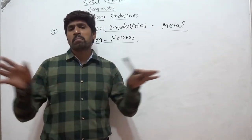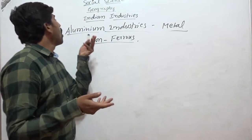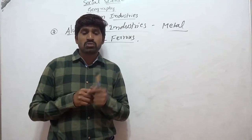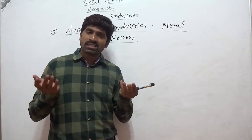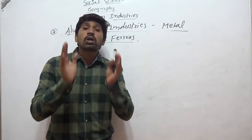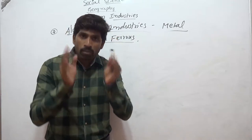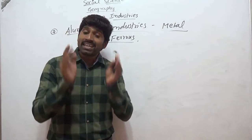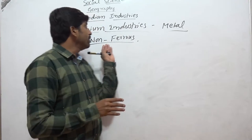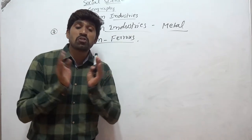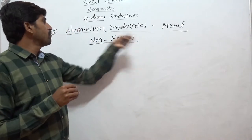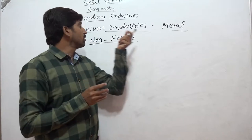The uses of aluminum industries include manufacturing of aeroplanes and automobiles, ships, railways, household appliances, electrical cables, and paint industries. It is also a good substitute for copper and steel.